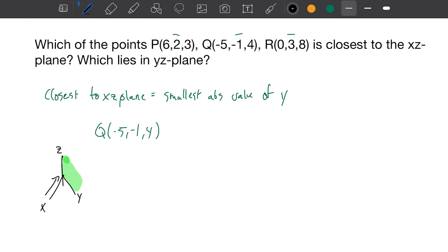So X is going to be 0 to be anywhere on this plane. The point which has an X of 0 is R at (0, 3, 8).